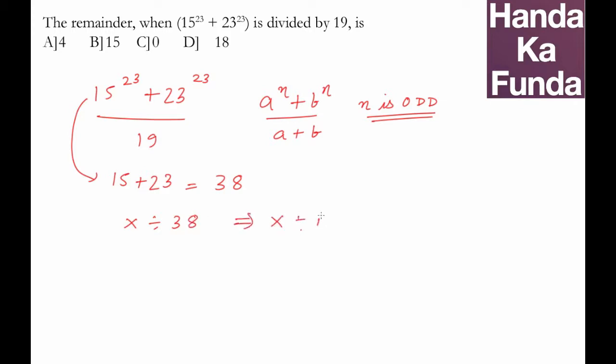that x is divisible by 19. And so if 15 to the power 23 plus 23 to the power 23 is divisible by 19, what will be our remainder here? Since it is divisible, our remainder will be 0, and that is given to me as option C. Thank you.